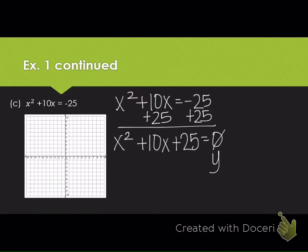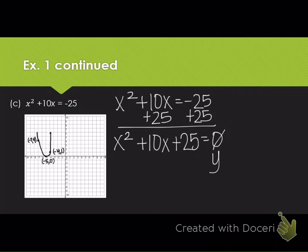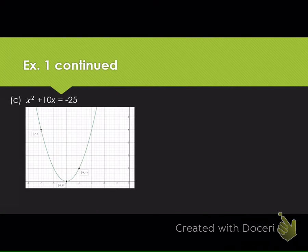I saw one very distinct point where the graph touched the x-axis, at negative 5, zero. I'll plot and label that. I also saw a point at negative 7, four and another at negative 4, one, so I'll plot and label both of those. This time, negative 5, zero was the vertex of the parabola, so I'll make that my vertex when drawing. There is one solution to this problem: the ordered pair negative 5, zero. I'd write that and box it in. Here is what I got from Desmos, showing where that graph came from.